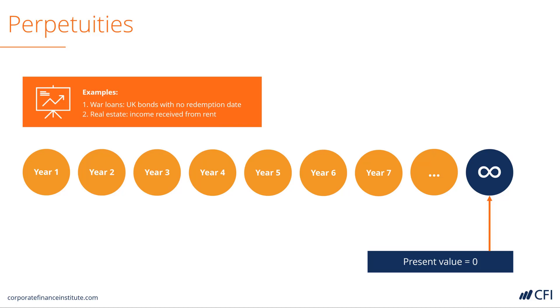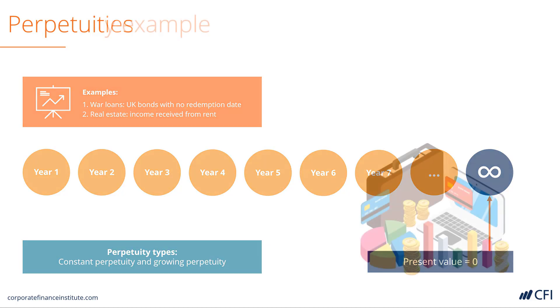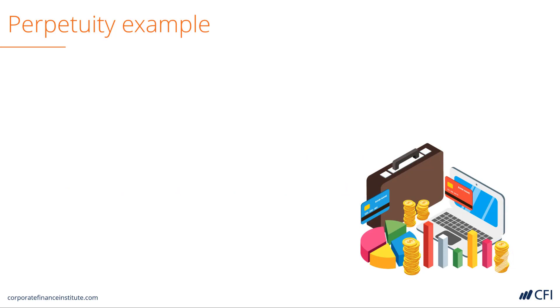We will look at two types of perpetuities: constant and growing perpetuities. Let's say we deposit $100 today. If interest rates are 10%, in one year's time I would have $110.